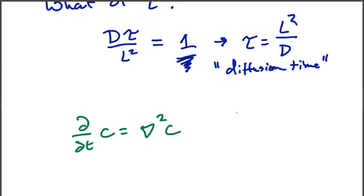And we have the quantity τ = L²/D, or equivalently D/L² times tau is equal to one.